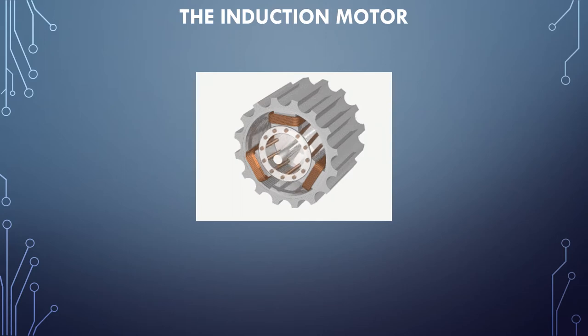This is a basic diagram of induction motor. It consists of two major parts: the stator, which is stationary, and the rotor, which rotates. An alternating current through the stator coils creates a rotating magnetic field. That magnetic field interacts with another field created by a current through the rotor coils, causing it to rotate as well.